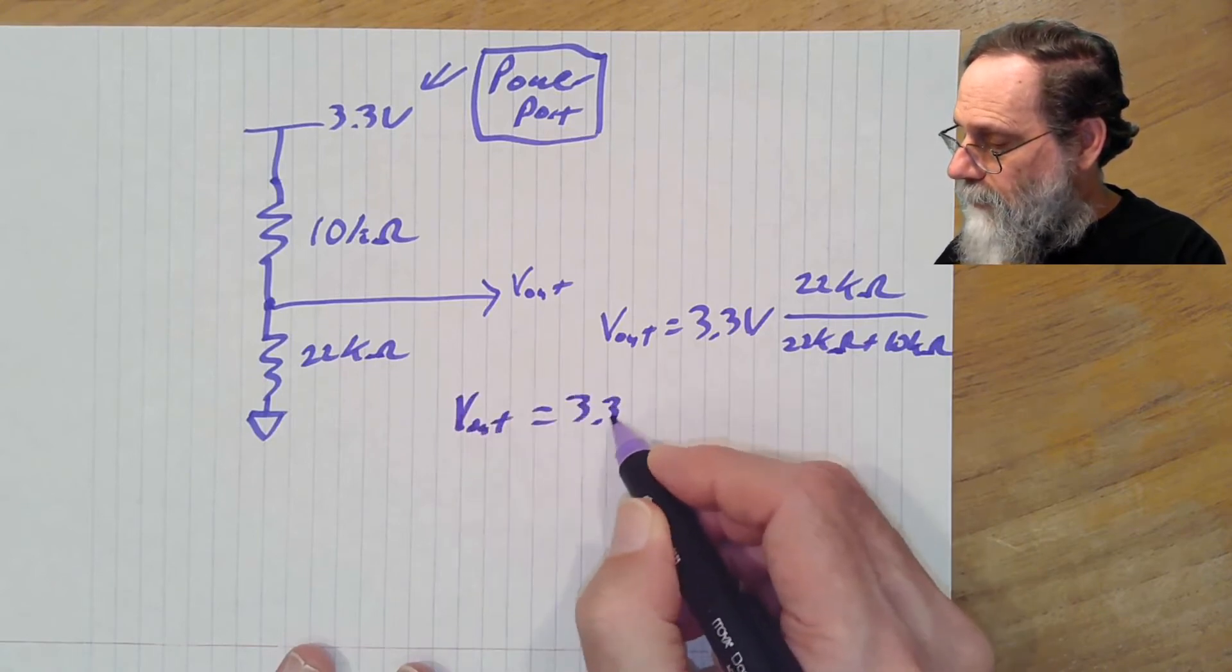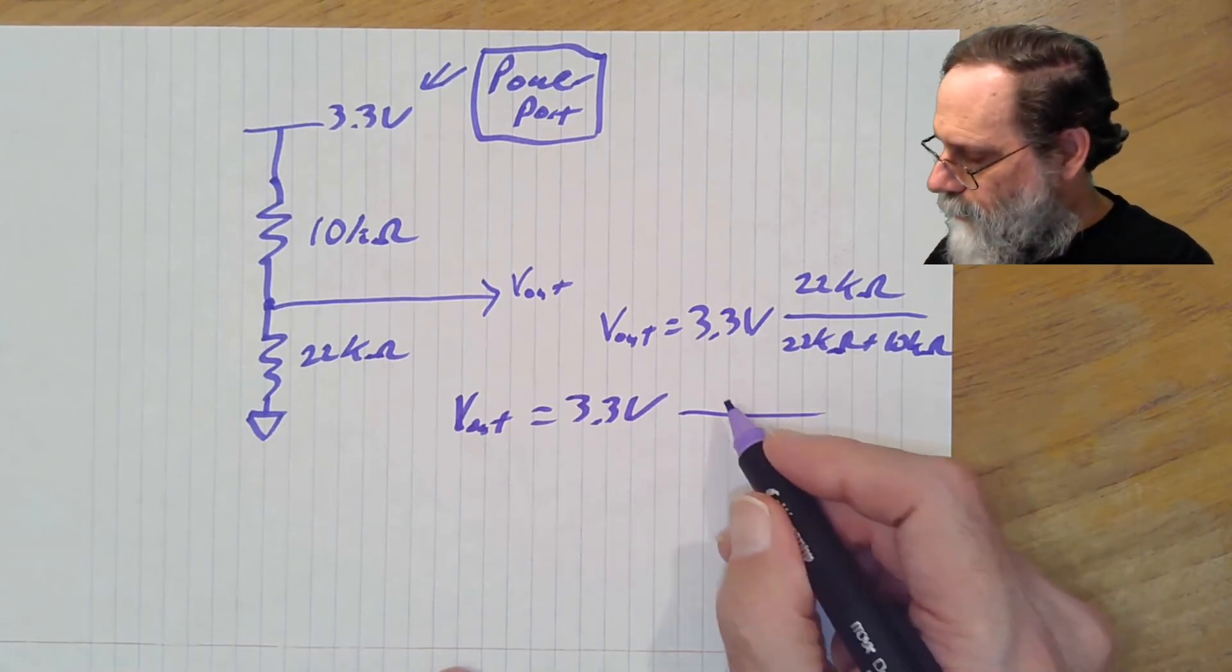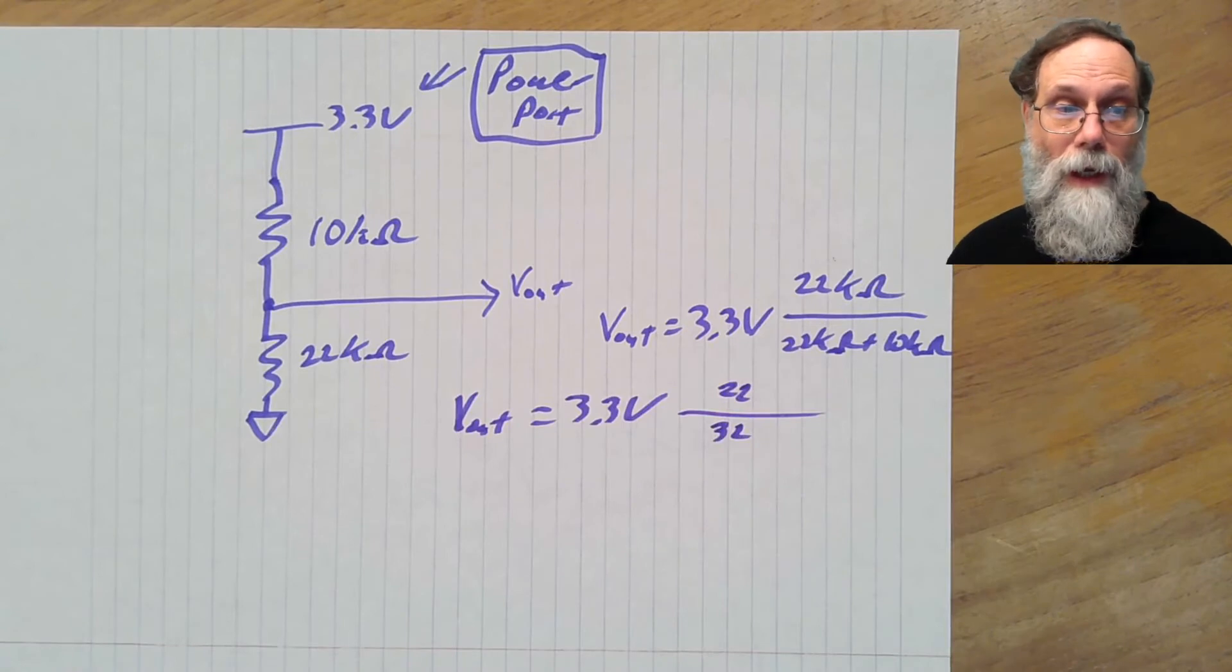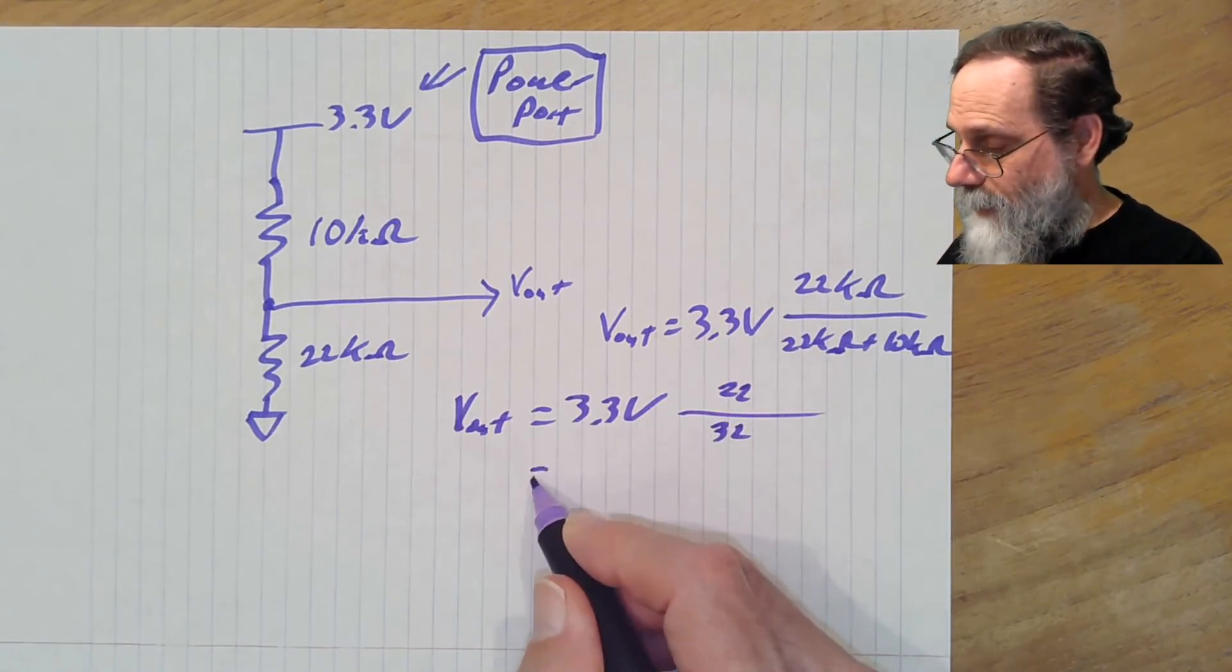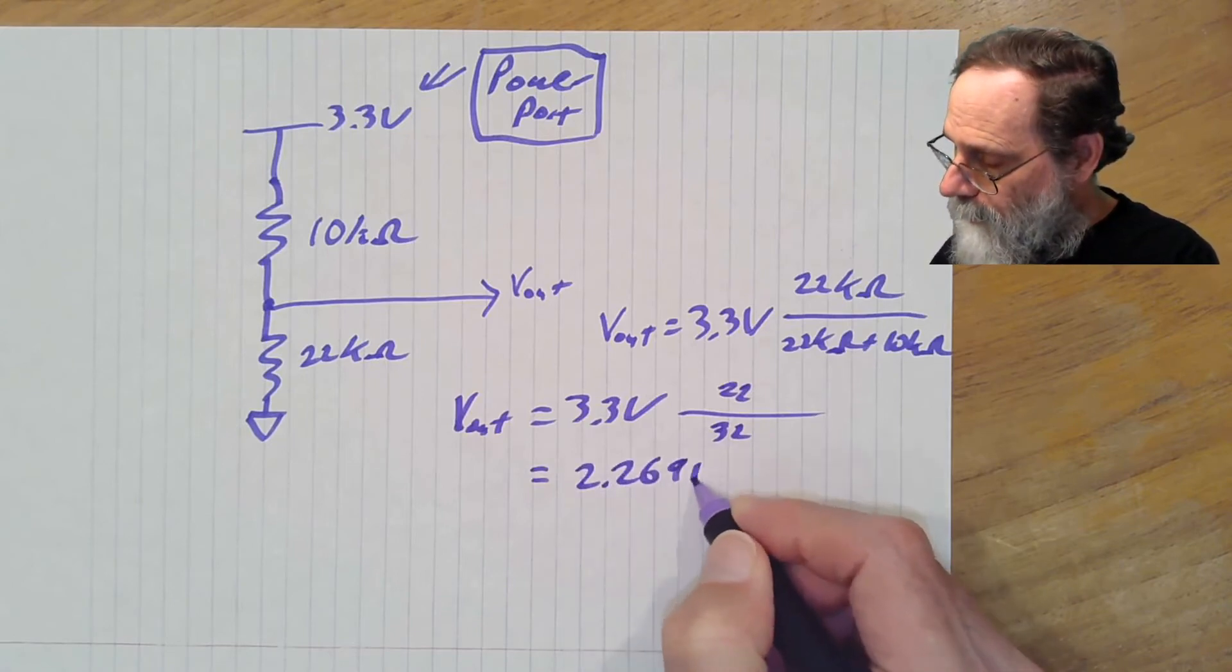Vout is 3.3 volts, and I can't do 22 over 32 in my head. But I can get out a calculator and do it, and I'll end up with something like 2.269 volts.